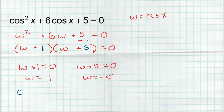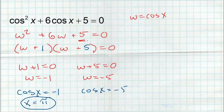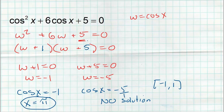Now bringing the trig back in: cosine of x equals negative 1, or cosine of x equals negative 5. Where is cosine of x equal to negative 1? That happens at pi — you should know that without even looking at the unit circle. And where is cosine equal to negative 5? Nowhere. The range for sine and cosine is negative one to one, so cosine can never be that low. So pi is the only answer from zero to two pi.